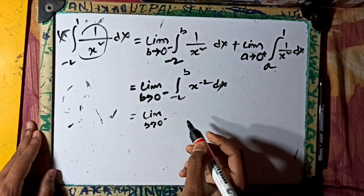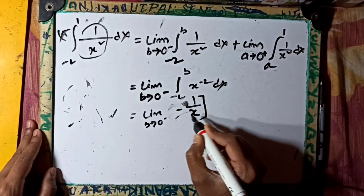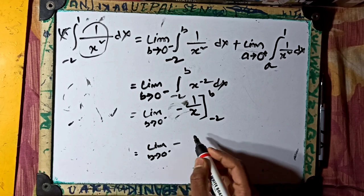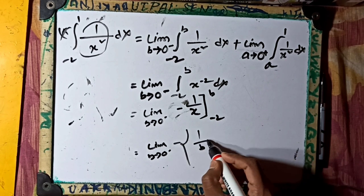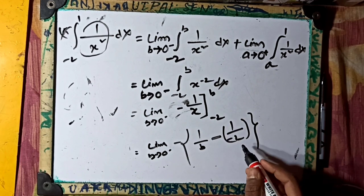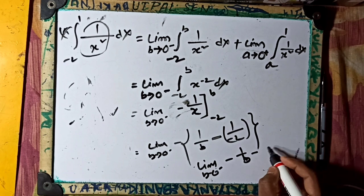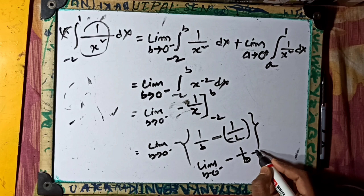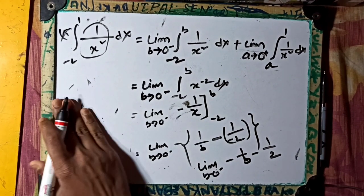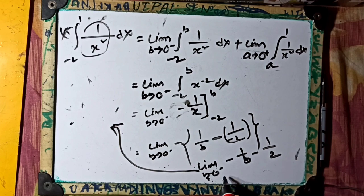Limit b tends to negative. This is minus 2. We're going to take a negative point and take the limit. Limit b tends to 0 from the negative side: negative 1 by 2, then positive. Applying L'Hôpital's rule, the limit of b tends to negative gives minus 1 by b, minus minus 1 by 2. The negative variable is negative.